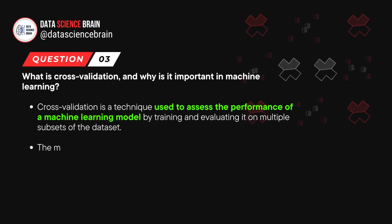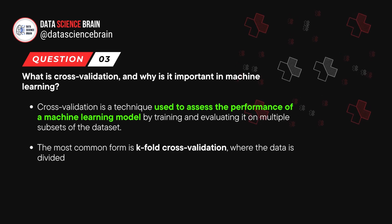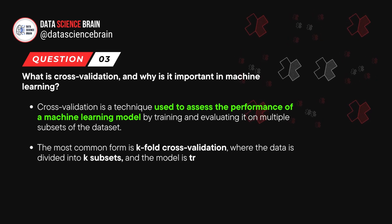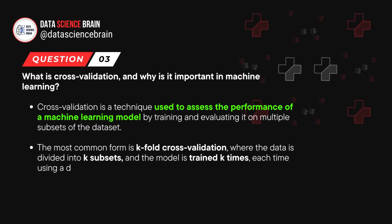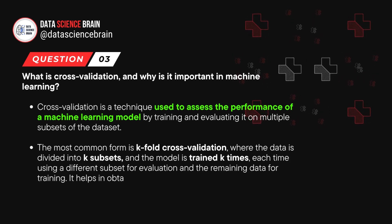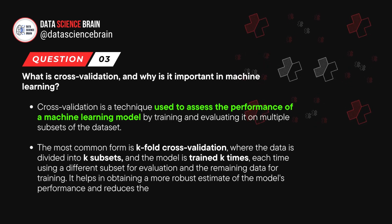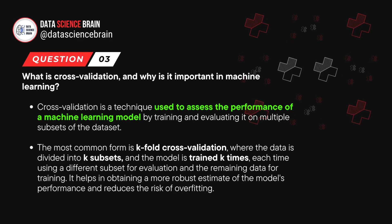The most common form is K-fold cross validation, where the data is divided into K subsets and the model is trained K times, each time using a different subset for evaluation and the remaining data for training. It helps in obtaining a more robust estimate of the model's performance and reduces the risk of overfitting.